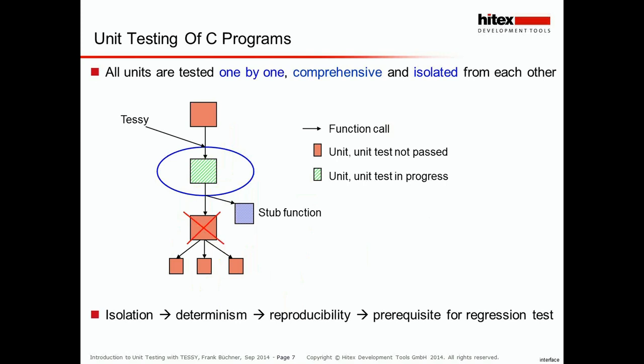Unit testing means that all units are tested one by one, isolated from the rest of the application, in a comprehensive manner. This means isolation is to the calling function and also to a called function if the unit under test calls other functions. There are two advantages of the isolation to the calling function. The first advantage is the test starts immediately. In system testing you need to wait until the function you want to test is called, or take special measures to get it called at all. This is not necessary during unit testing — the test starts immediately.